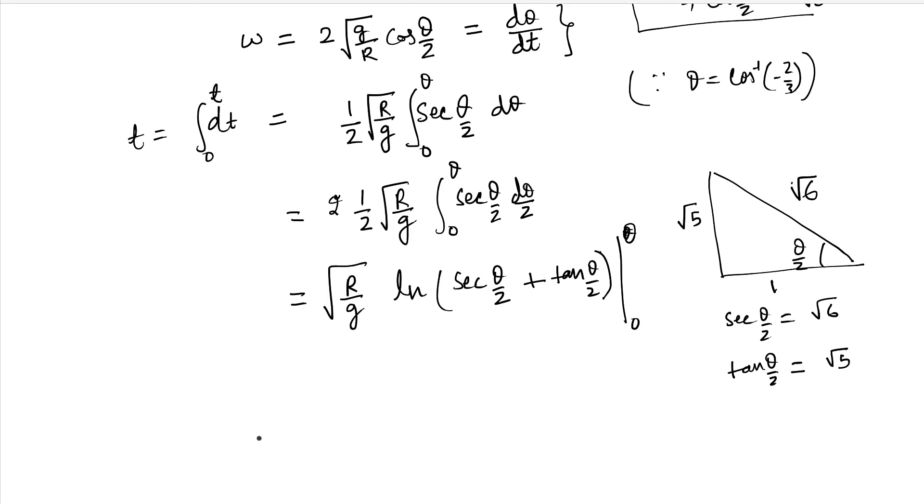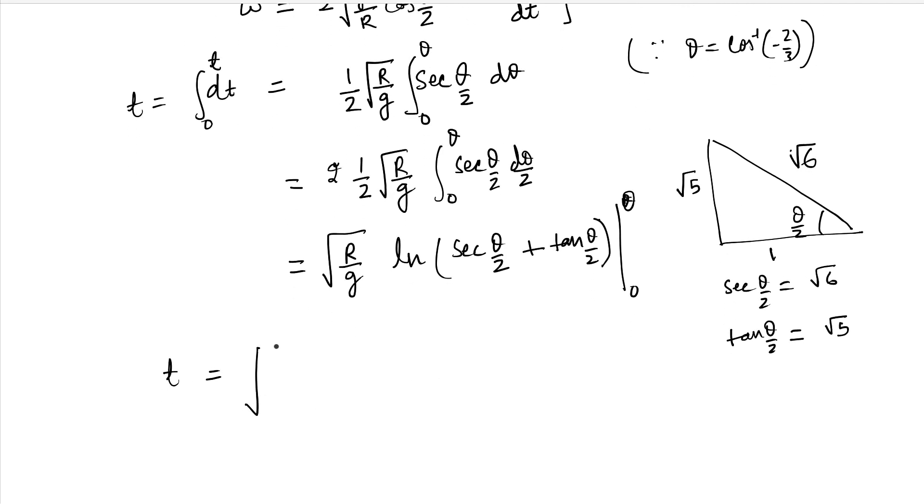So the equation for time will be square root of (r by g) ln(root 5 plus root 6), and that is the expression for the time. So it will take this much time to reach the point where the reaction force is zero. Now if you see, this is independent of the initial velocity because we assume that the velocity is good enough to take it to the highest point, and it is also independent of the mass of the particle.